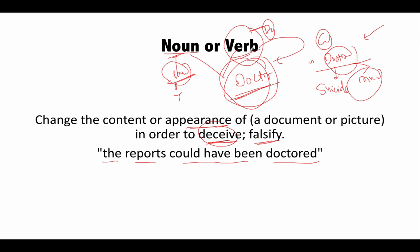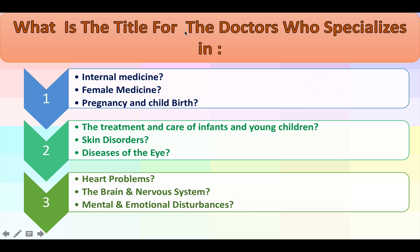That is how the verb 'doctor' is used. But in this video we are mainly concerned with doctor as a noun. So what are these doctors called: a doctor who specializes in internal medicine, female medicine, pregnancy, childbirth, skin disorders, eye, heart problems? By the time this video finishes, you will be in a very good position to answer most of these questions.